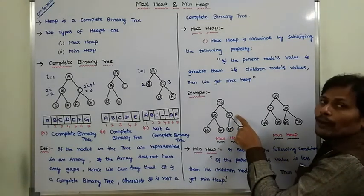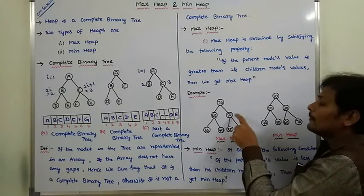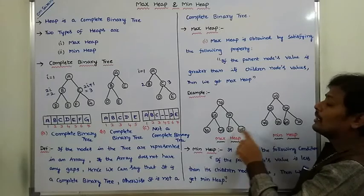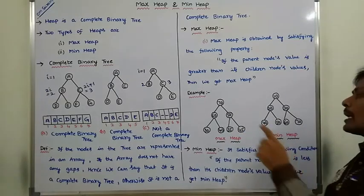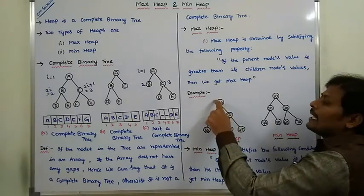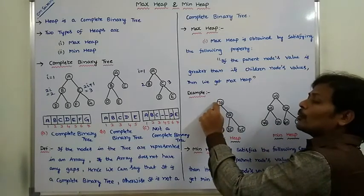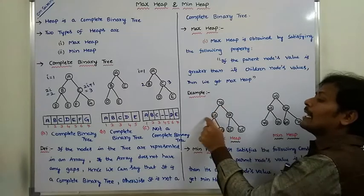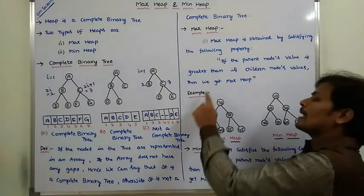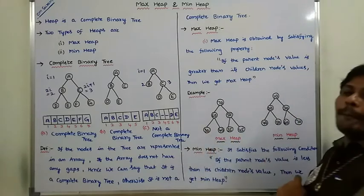Go for node 50. Its children are 35 and 45. 50 is greater than 35, and 50 is greater than 45. Now consider node 70. Its children are 60 and 50. 70 is greater than 60, and 70 is greater than 50. Hence the parent node value 70 is greater than its children's nodes values 60 and 50. It satisfies the maximum heap property, hence it is a maximum heap.